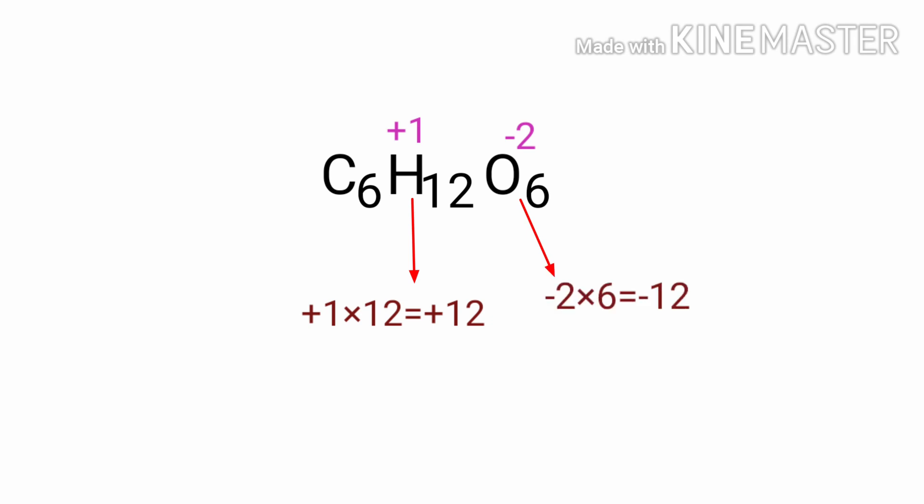As per the rule of assigning oxidation numbers, the sum of the oxidation numbers of atoms in a neutral compound is 0. In this molecule, the sum of the oxidation numbers of hydrogen and oxygen atoms is equal to 0.